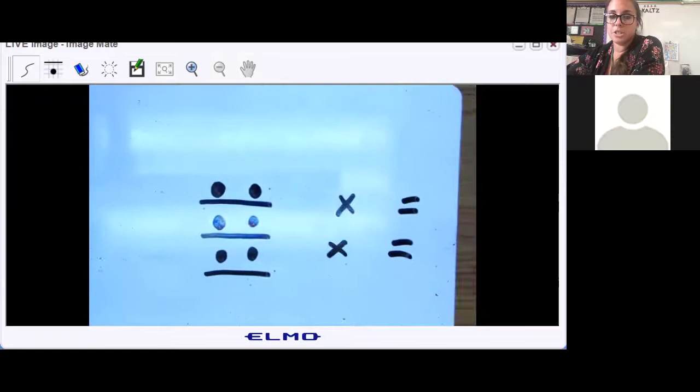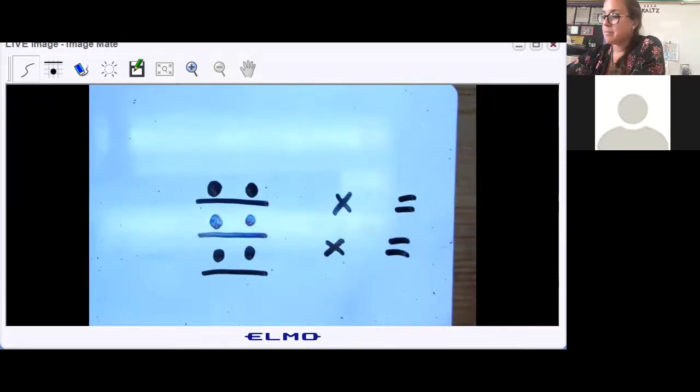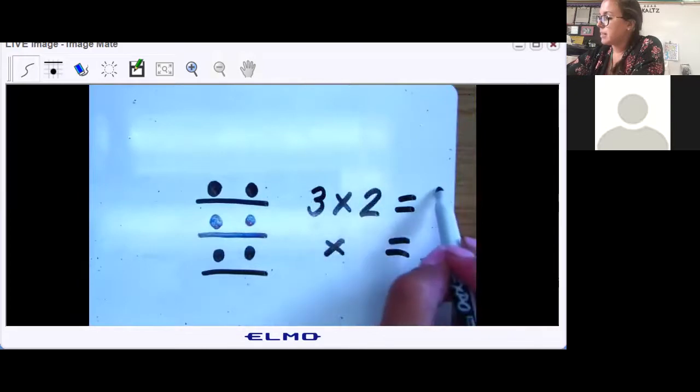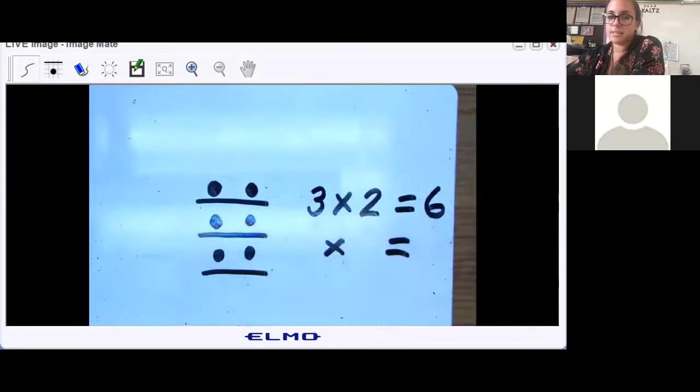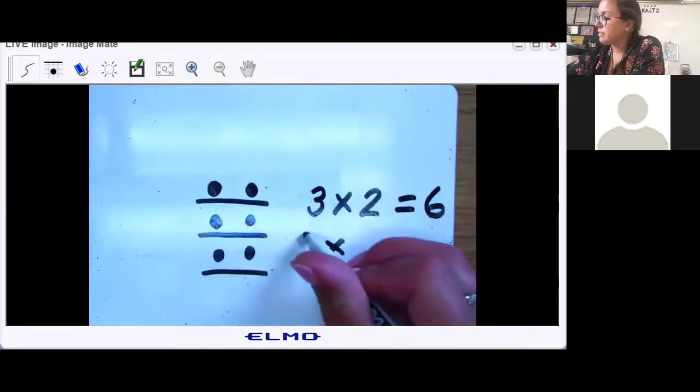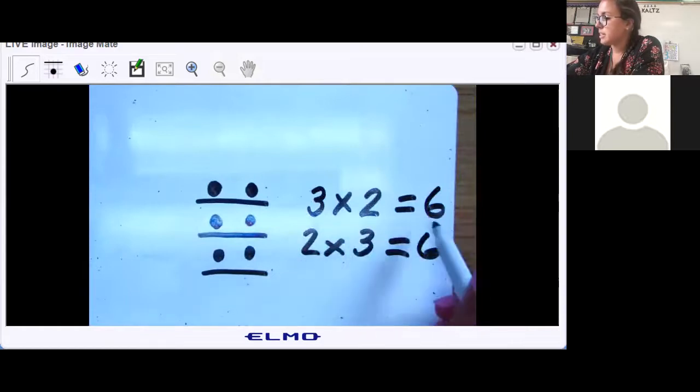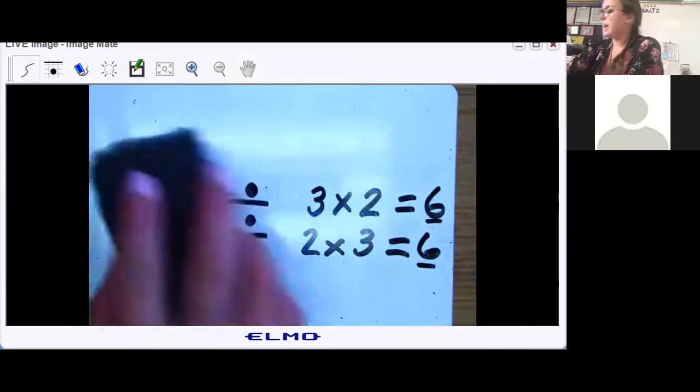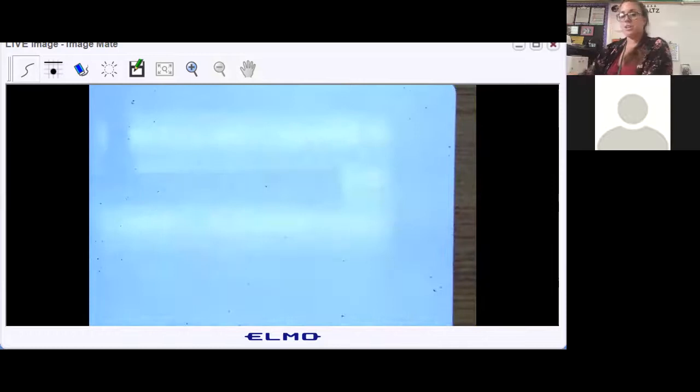All right, now that you've written two multiplication problems for this array, let me show you the answer. You could have said three times two equals six, or two times three equals six. Both of them have the answer of six. Okay, all right, how did you do? Let's try another one.